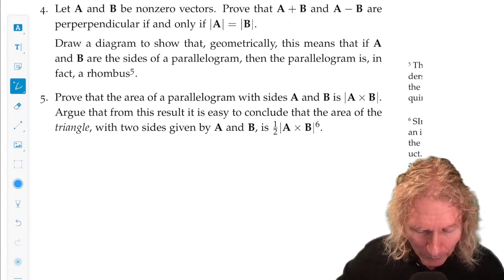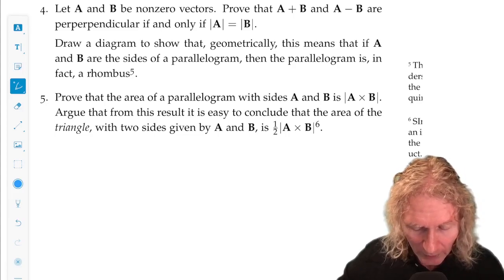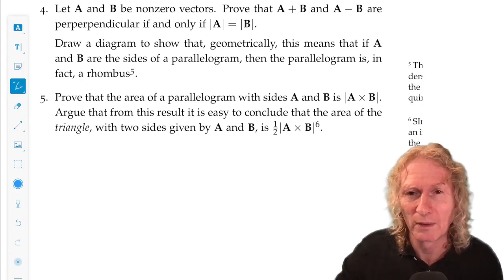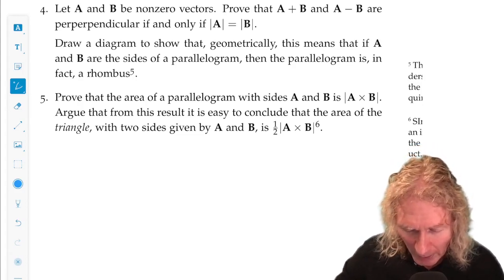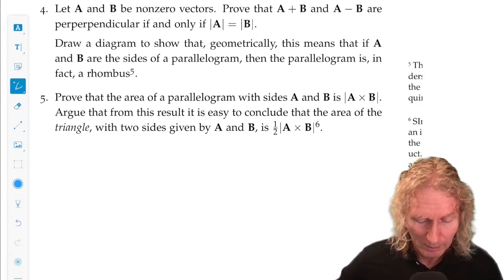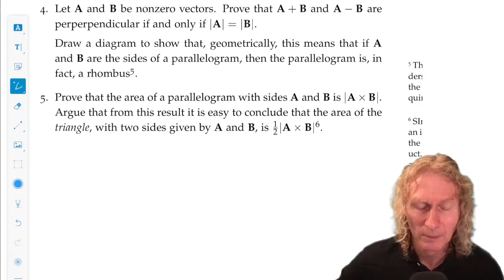Prove that the area of a parallelogram with the sides vector A and vector B, we know from the construction that in what sense they form a parallelogram, is the magnitude of A cross B.